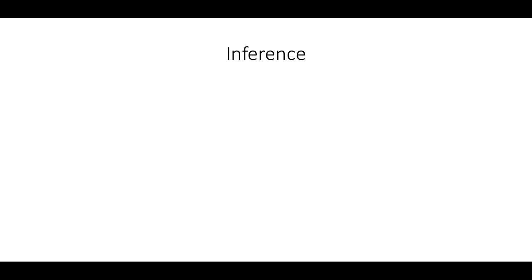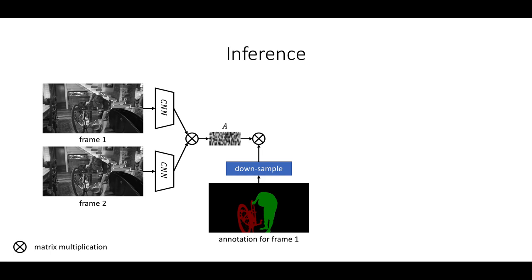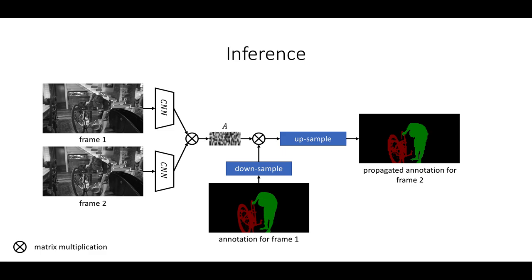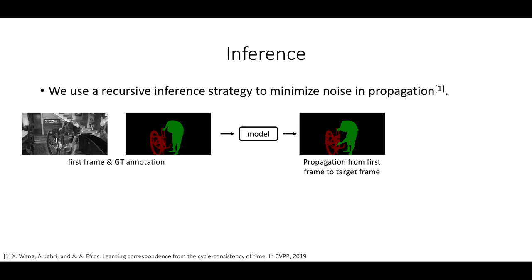During inference, we can follow the pipeline of training by first using the trained CNN to extract features from two consecutive frames and calculate an affinity matrix A. Then we propagate any annotations like segmentation or keypoint from frame 1 to frame 2 by a dot product between the affinity matrix and the provided annotation.